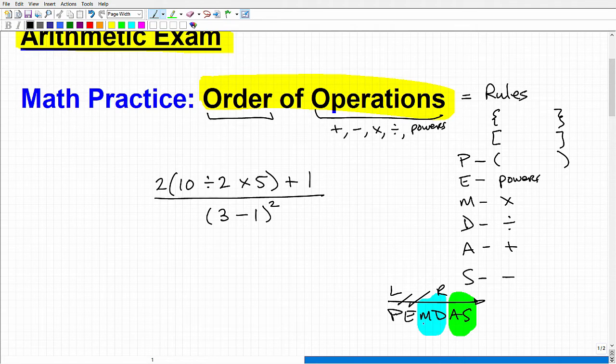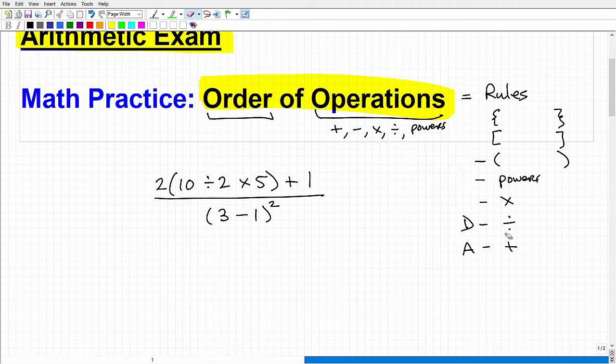M and D and A and S, multiplication and division and addition and subtraction. We're going to do whatever we see first from left to right. So in other words, I'm not always going to do multiplication and division first. If I see division first from left to right and then multiplication, the order changes. Same thing with subtraction and addition. So just know from multiplication and division and addition and subtraction, it's whatever operation you see first from left to right. With that being said, I'm going to erase all of this and we'll get going.